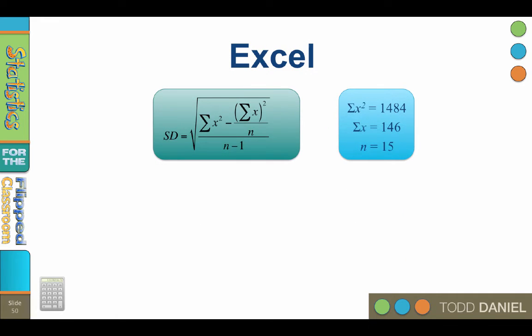Once we have calculated the needed values, we would plug them into the blank formula. The sum of x plugs in as 146. The sum of x squared is 1484, and n is 15. Using our PEMDAS rule, we would start with the parentheses.